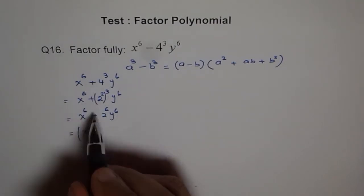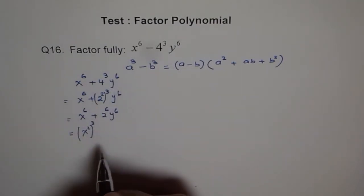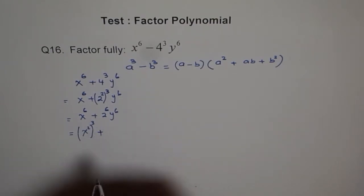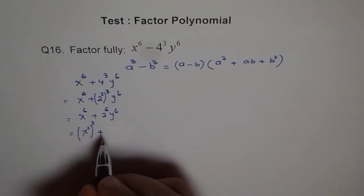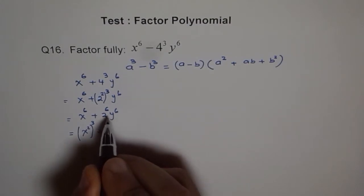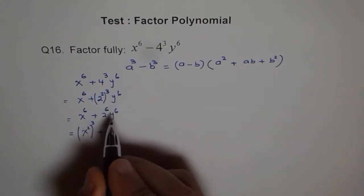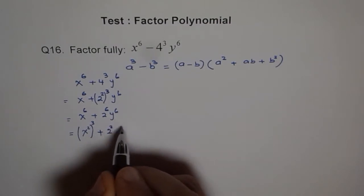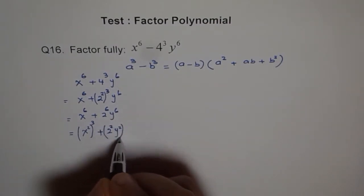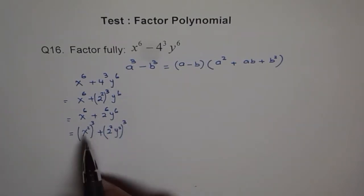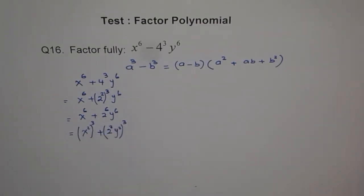I wrote plus all the way — it was minus in the original, but anyway we will go with plus. So we can say this is x square cubed plus 2 square y square cubed, which means we can write it as (x²)³ + (2²y²)³. Now it becomes an a cube plus b cube form.